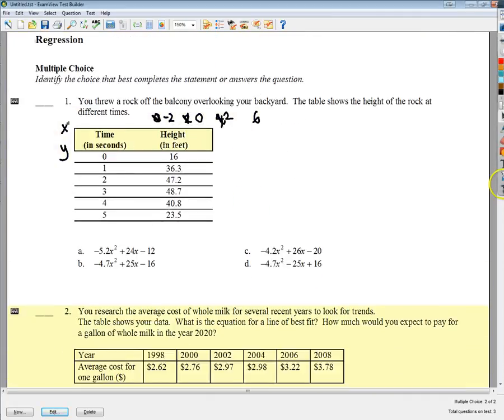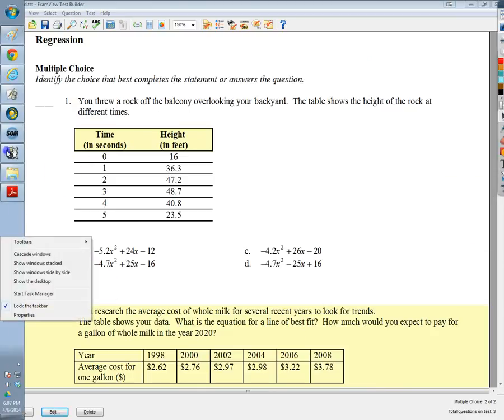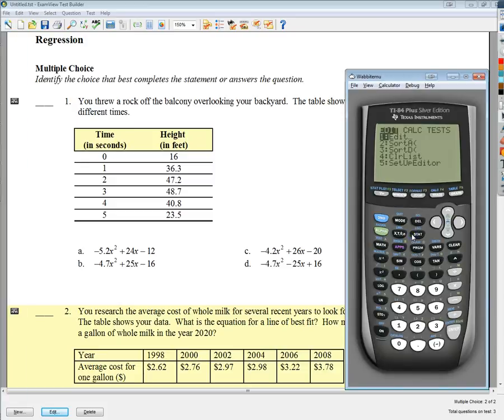On to number two, or number one here. I'm going to go into my list again and edit. This one is a little bit cleaner in terms of the numbers I'm going to use. They're also telling me I threw the rock off the balcony. All the answer choices are quadratic, so I'm guessing it's quadratic, but I'm just going to graph it really quick as soon as I get it all in.